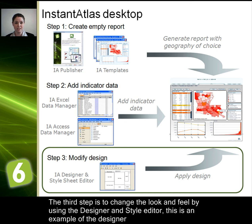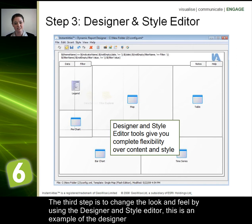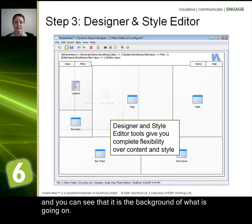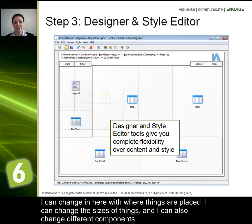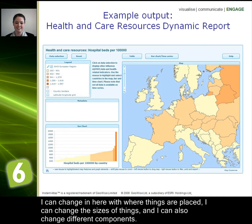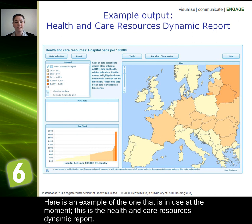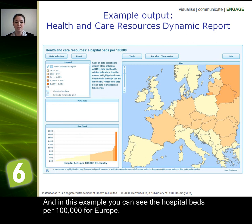The third step is to change the look and feel by using the Designer and the Style Editor. This is an example of the Designer, and you can see the background of what's going on. I can change where things are placed, I can change the sizes of things, and I can also change different components. Here's an example of one that's in use at the moment — this is the Health and Care Resources dynamic report, and in this example you can see the hospital beds per 100,000 for Europe.